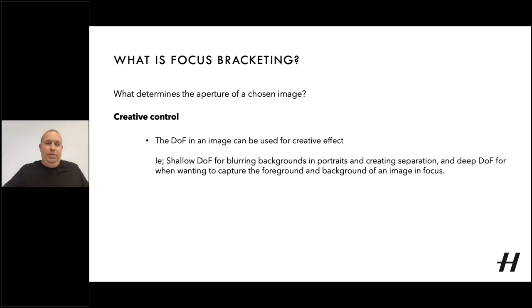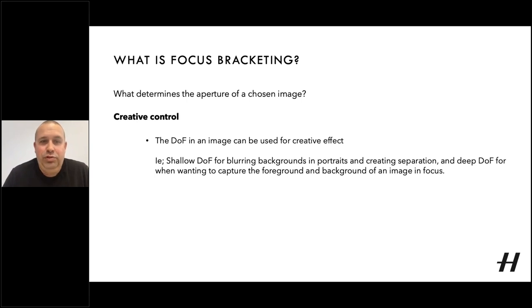What determines our chosen aperture? The first could be creative control. The depth of field in an image can be used for creative effects — shallow depth of field for blur in backgrounds in portraits and creating separation, or deep depth of field when wanting to capture the foreground and background in focus. Here are a couple of images shot on our XCD 80mm at an aperture of 1.9, demonstrating how shallow depth of field is used to separate the subject from the background and draw attention to the eye.